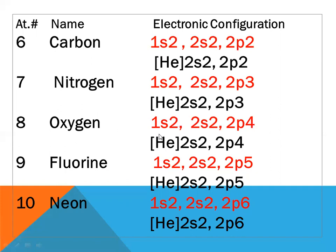Fluorine, atomic number nine: configuration 1s2 2s2 2p5. Instead of 1s2 we place helium, and the remaining valence configuration is 2s2 2p5.